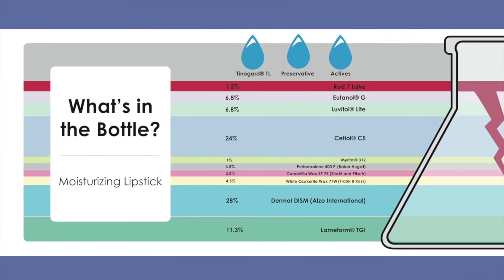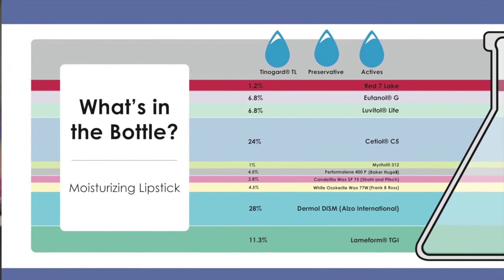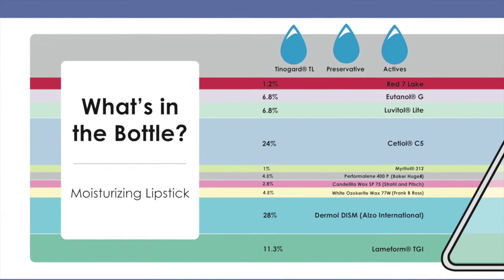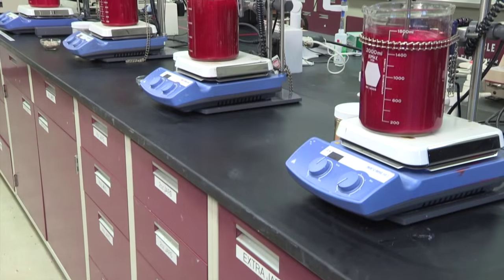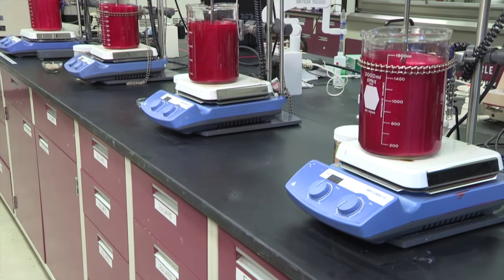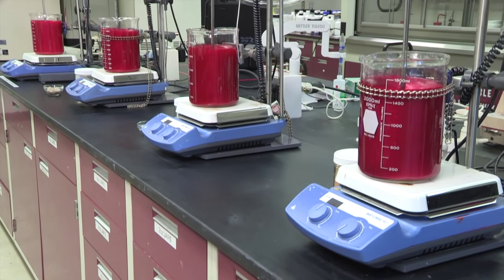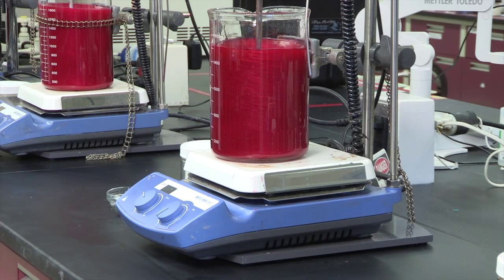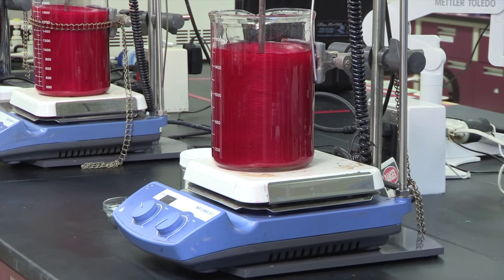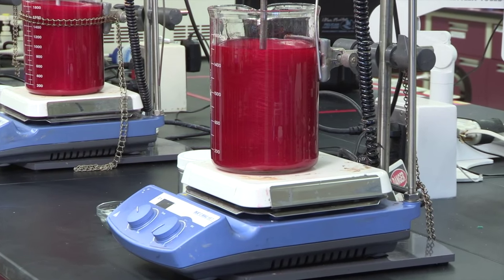This is a representative formula of the lipstick we'll be working with today. The process of putting together an anhydrous formulation is relatively simple, consisting of only a few steps. First, you bring your base up to temperature, usually around 80 to 85 degrees Celsius, and once the mixture is totally melted and uniform, you can add your effects.